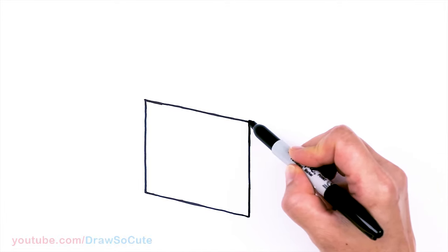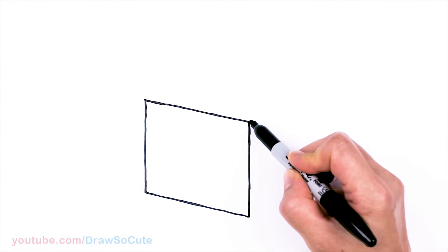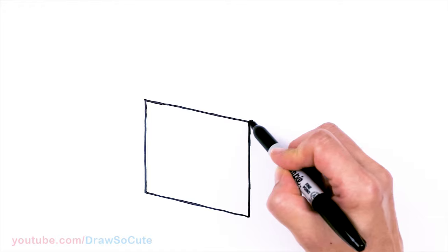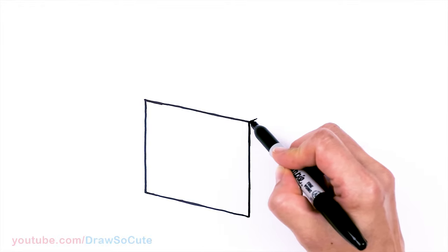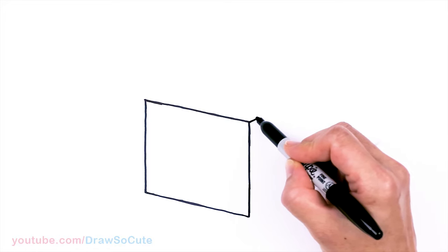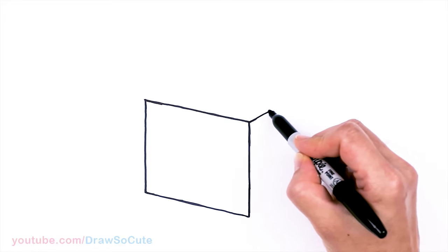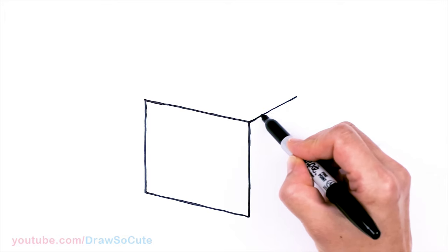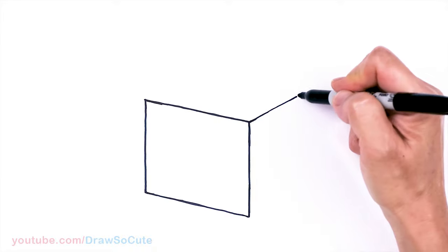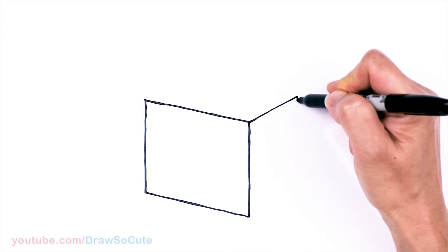Then from there, I'm going to come to this angle and we're going to go across. So about right here. And this one's going to be a little bit narrower. So let's say about right there, I'm going to stop. And then once again, I'm going to go straight down.